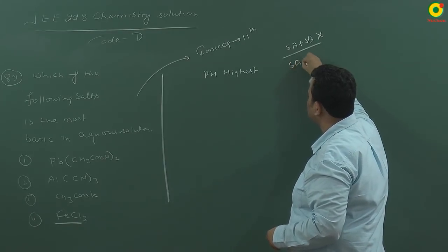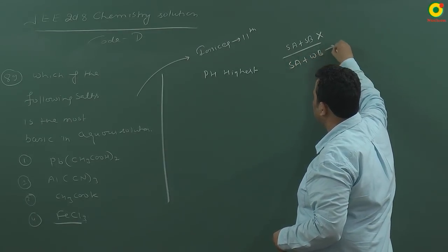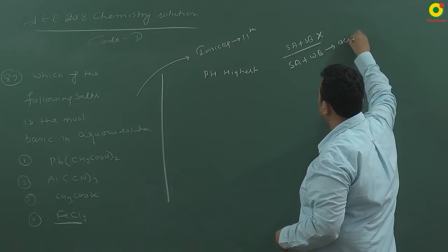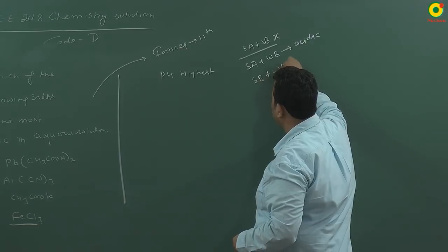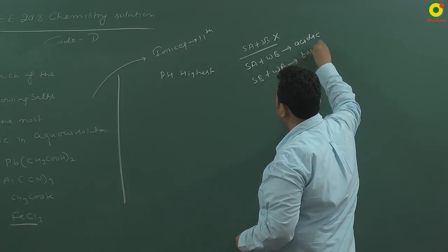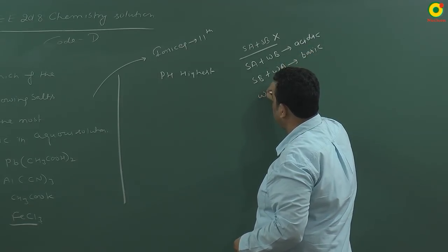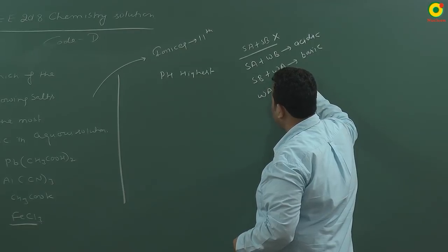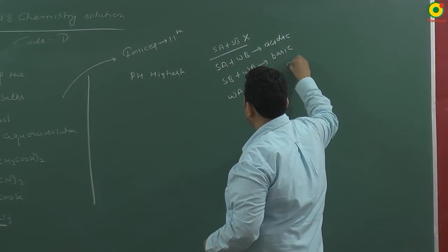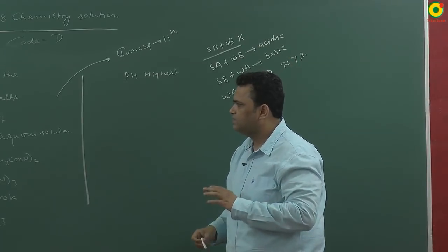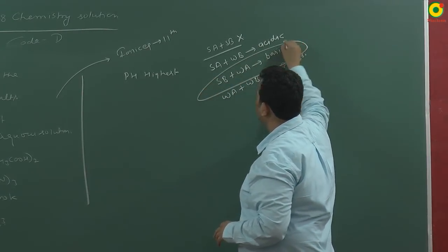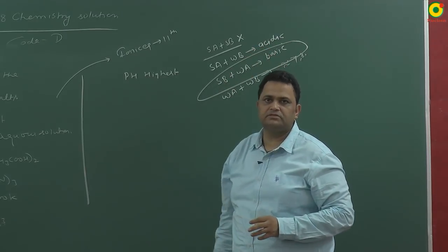Strong acid plus strong base mostly gives neutral solution. Strong acid plus weak base gives acidic solution. Strong base plus weak acid gives basic solution. Weak acid plus weak base is close to 7 or 8 or 9. If we are checking for the most basic solution, the category will be strong base plus weak acid salt.